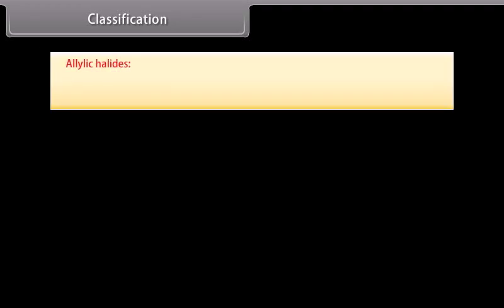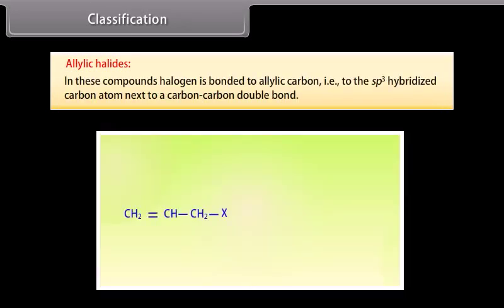Allylic halides. In these compounds, halogen is bonded to allylic compounds, that is to the sp3 hybridized carbon atom and next to a carbon-carbon double bond.